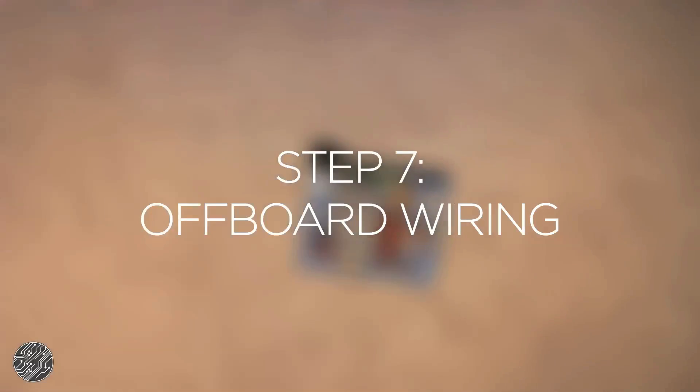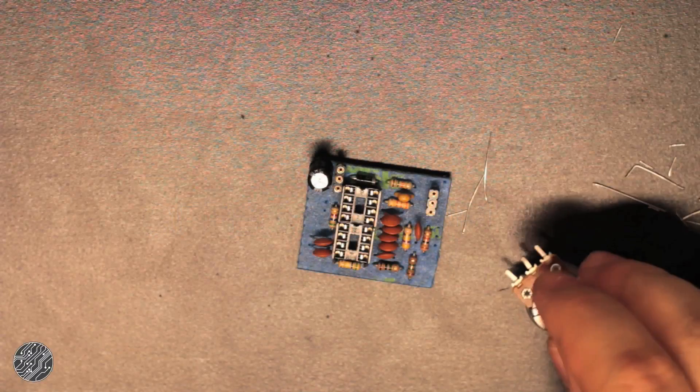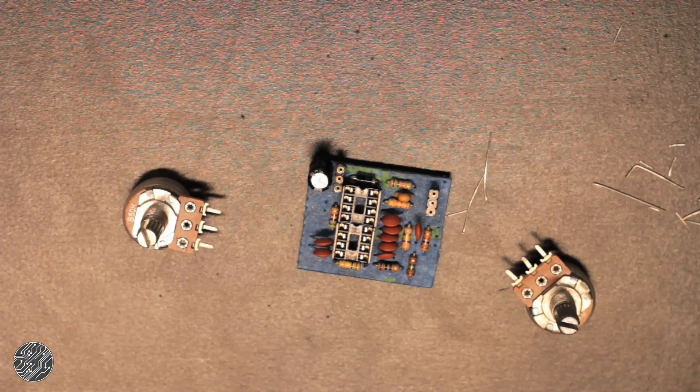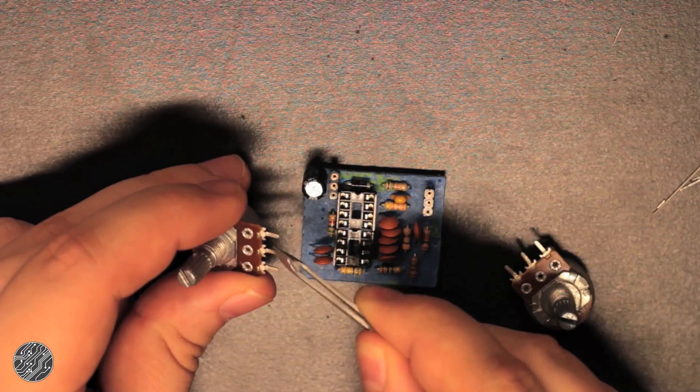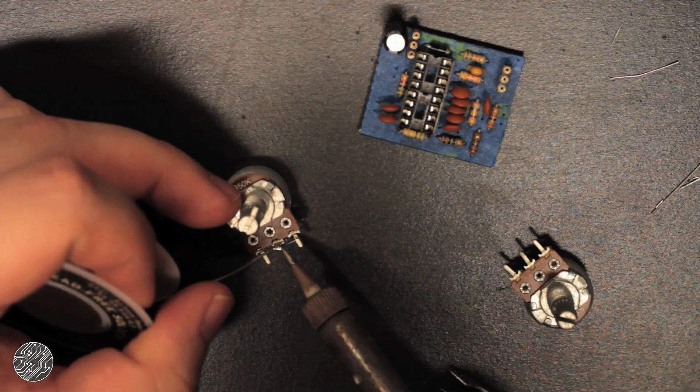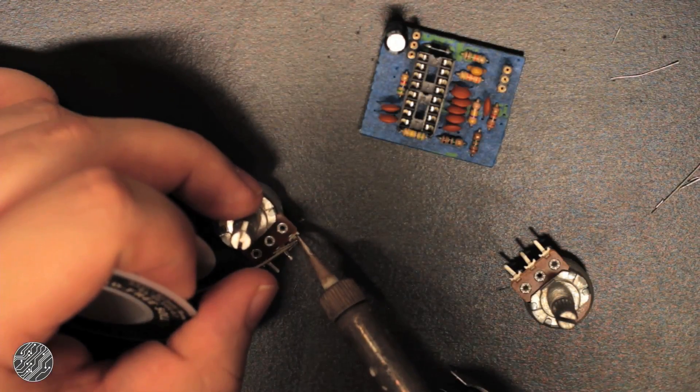Step seven: offboard wiring. Ah, wiring up pots. My favorite thing to do. One of the pots is wired as a variable resistor, so we can use another component cutoff to jumper the two legs of the time pot.